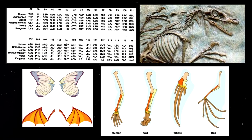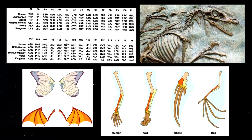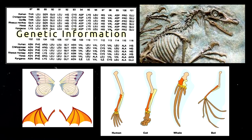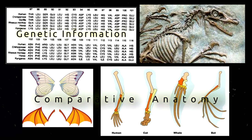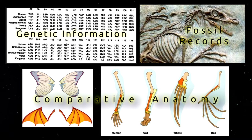Now there are three pictures displayed on the screen. You will determine which of these is evidence for comparative anatomy, fossil records, or genetic information. The first picture shows genetic information — it displays the sequence of amino acids. The second is comparative anatomy. And the third shows fossil records.